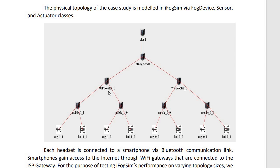Every edge device comes with an actuator and a sensor, and these edge devices are owned by the game players. These devices are connected to a Wi-Fi router for their communication. Mobile 11 and mobile 10 are two users in the same region, connected to a Wi-Fi router on the tower. Similarly, the other two users, mobile 00 and mobile 01, are connected to what we can call a base station.